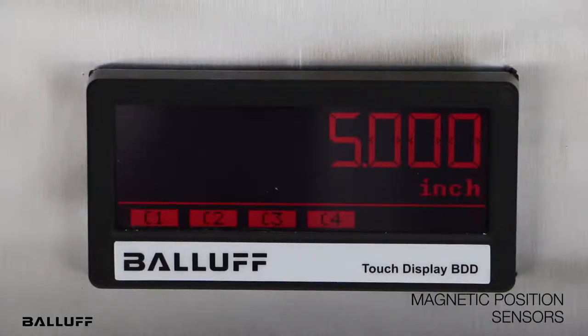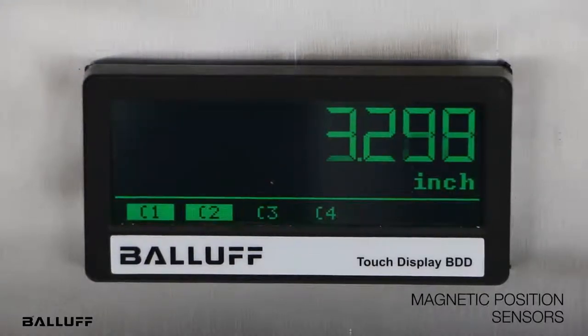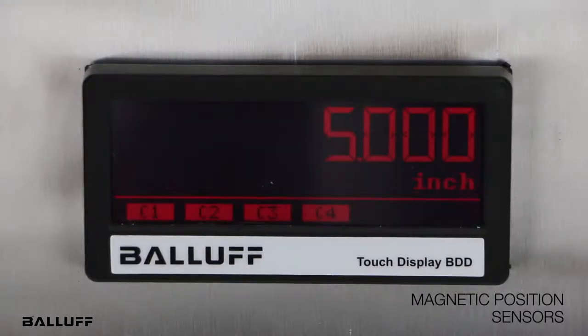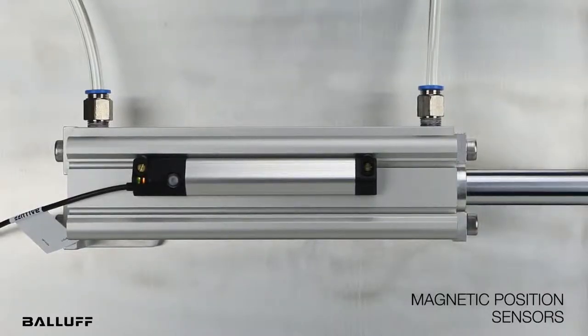The BMP Magnetic Position Sensors calculate the actual target position of the magnet and output it as a position-dependent analog or IO-Link signal. And the sensor's compact size allows for integration in very limited installation spaces.